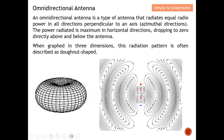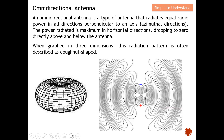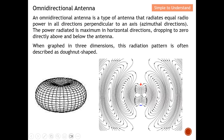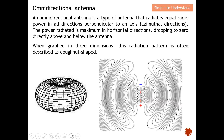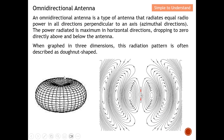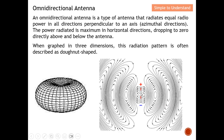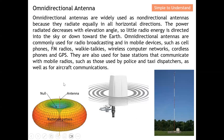Imagine the antenna is right in the middle of the donut. The energy mainly focuses on the horizontal direction — either to the left or to the right — with nothing on top and nothing at the bottom of the antenna. This is the omni-directional antenna, which focuses on the horizontal direction.